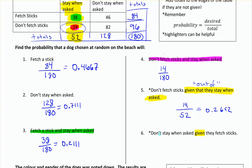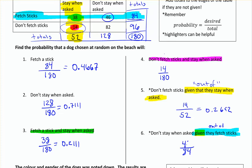Don't stay when asked, given that they fetch sticks. Using that as our hint — given that they fetch sticks — those that fetch sticks are everybody in that row, which is 84 dogs. So again, that's my 'out of.' How many of them don't stay when asked? In that case, 46 of them do not stay when asked. So 46 out of 84 gives you 0.5476. With conditionals, identify what your 'out of' is — it narrows down the table. You narrow it down to the hint given, which is a smaller number than the total, then look for the number you actually want out of that group.